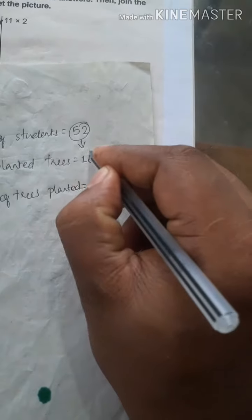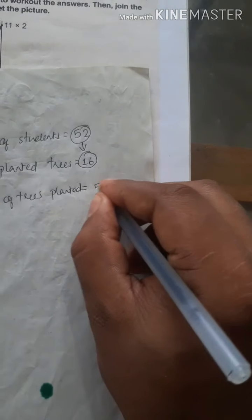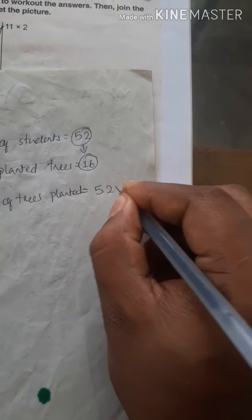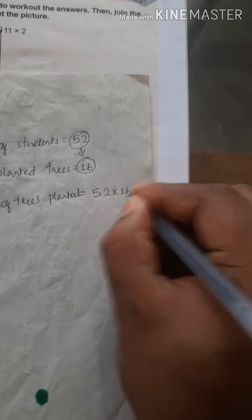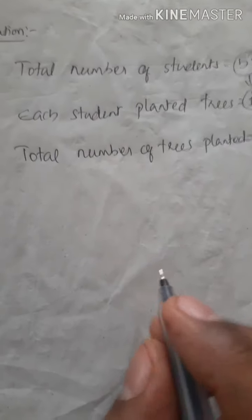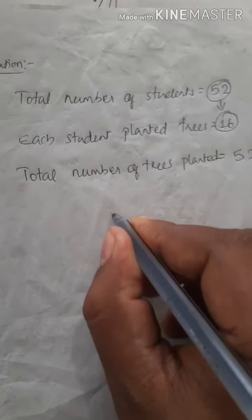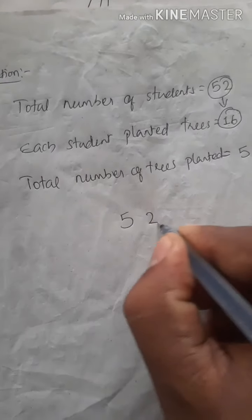First we have to do 9 into 20 or 20 into 9. Ones column first: 0 into 9 is 0, 2 into 9 is 18. So 20 into 9 is 180.